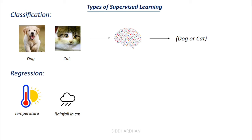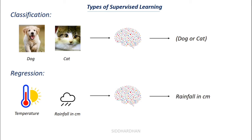For regression: say we need to predict rainfall in centimeters for a given temperature, pressure, and other factors. We train the model by telling it that for a given temperature there will be a certain amount of rainfall, across many different cases. Once the model has learned, when we give it a new temperature value it can tell us how much rainfall to expect. The rainfall in centimeters is a continuous, possibly decimal value — that's regression.